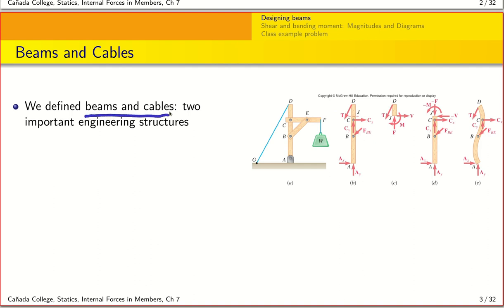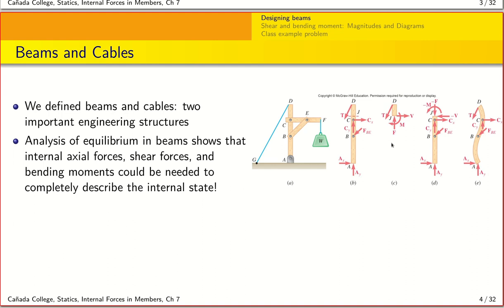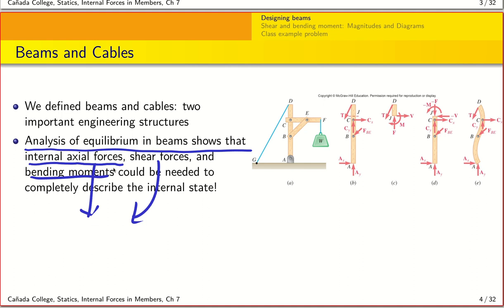Beams are one of the most important engineering structures used in a variety of load-bearing applications. We looked at analyzing a beam both as a two-force member and as a multi-force member, and identified that it's possible to assign internal states of forces at any position along the beam. When you analyze the equilibrium and look at the internal forces, you find that you have to assign an axial force, a shear force, and a bending moment to completely describe the internal state.